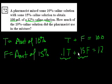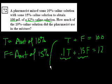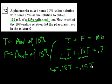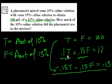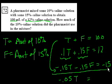Now we have two linear equations and two unknowns. We want to cancel out F and solve for T. Multiply the top equation by minus 0.15, giving minus 0.15T minus 0.15F equals minus 15. Adding the two equations: 0.1 minus 0.15 gives minus 0.05T, the F terms cancel, and it equals 12 minus 15, which is minus 3.